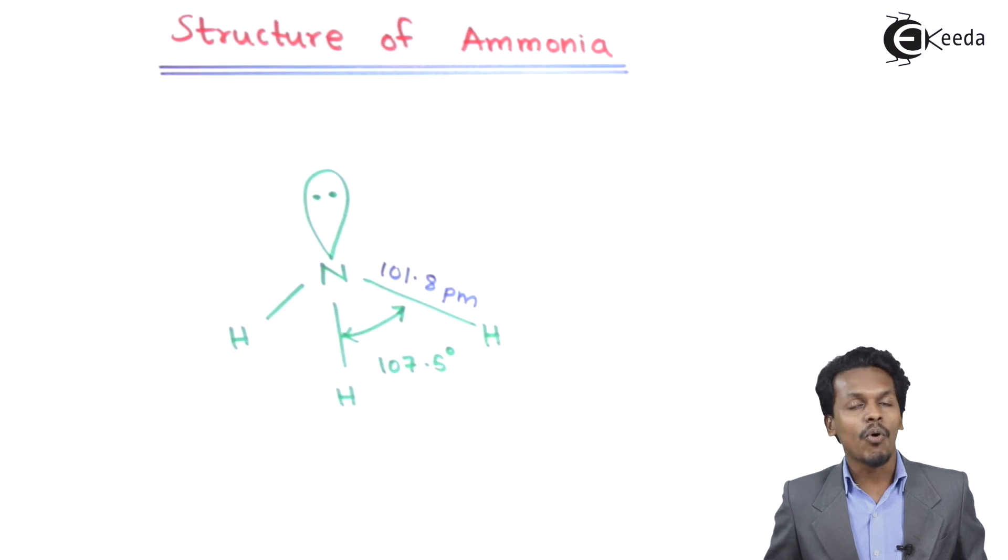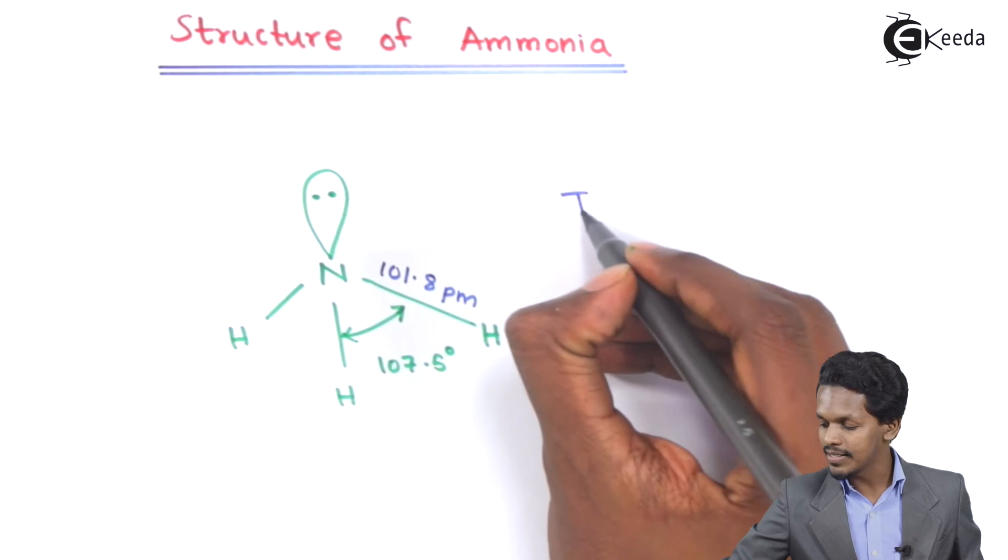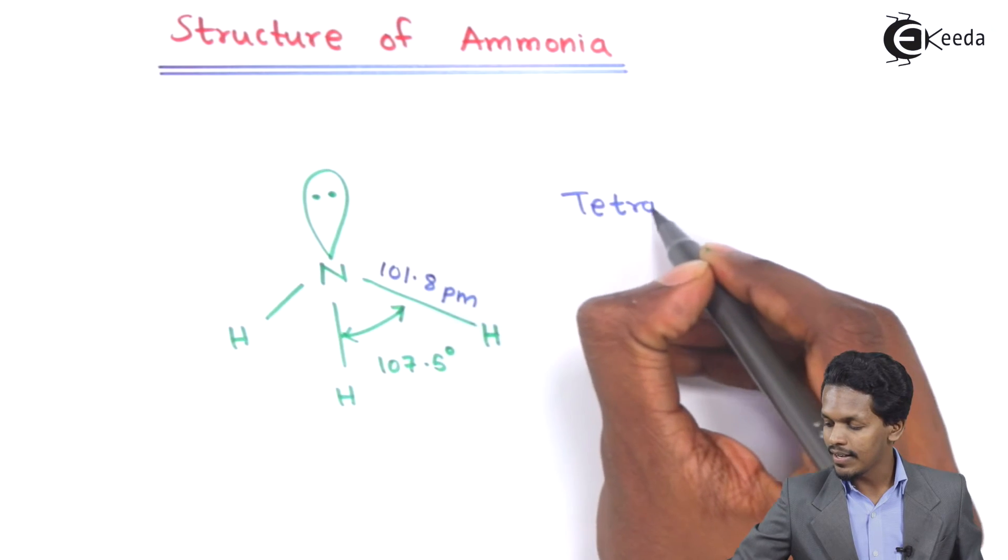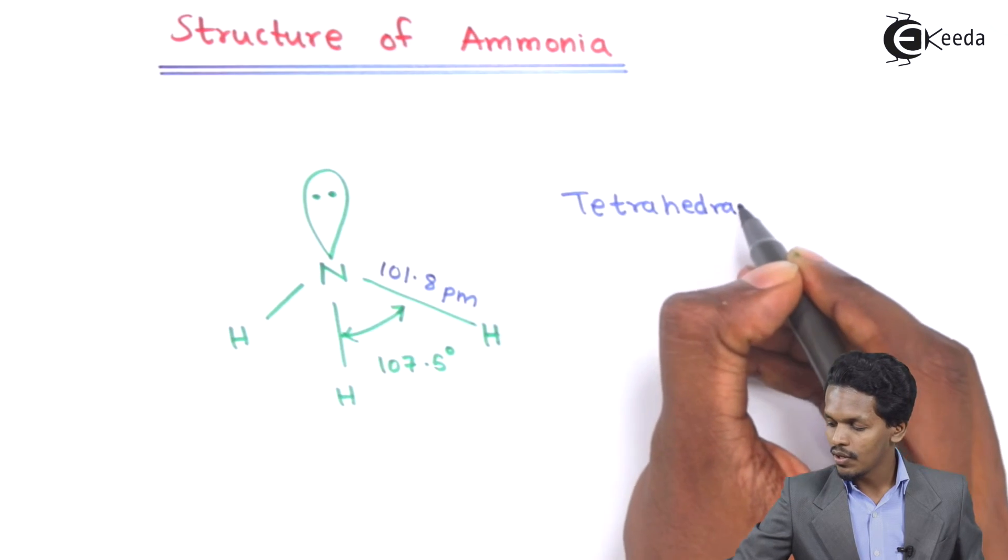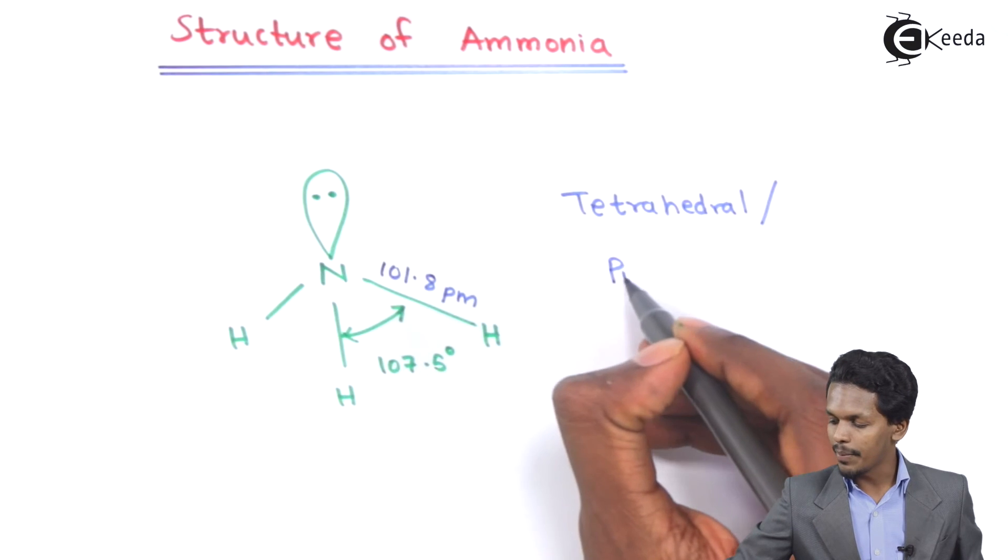So therefore this is nothing but the bond length between the nitrogen and hydrogen and this is what we have got in geometry that is tetrahedral or we could also call it as pyramidal geometry.